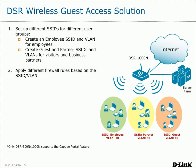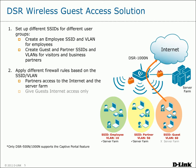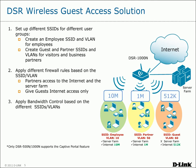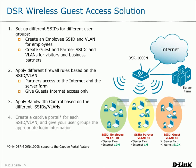Employees are given full network access. We can continue to apply bandwidth control based on the different SSID and VLAN combinations. In our example, employees are granted the most bandwidth — 10 megabits — but partners are limited to 1 megabit of bandwidth, and guests are limited to 512k of bandwidth.